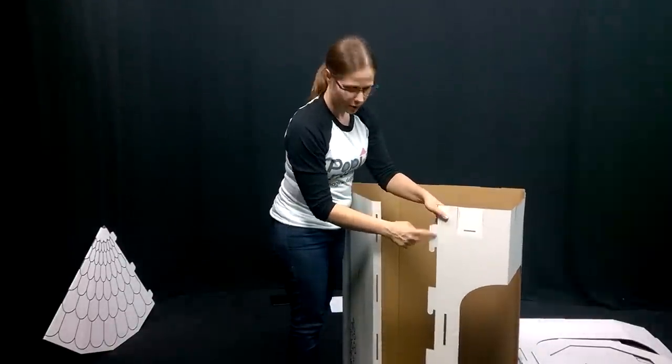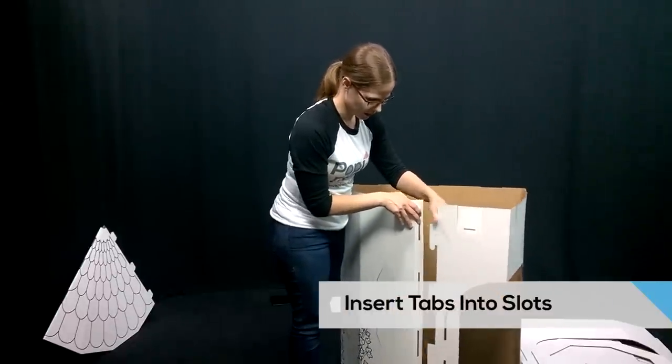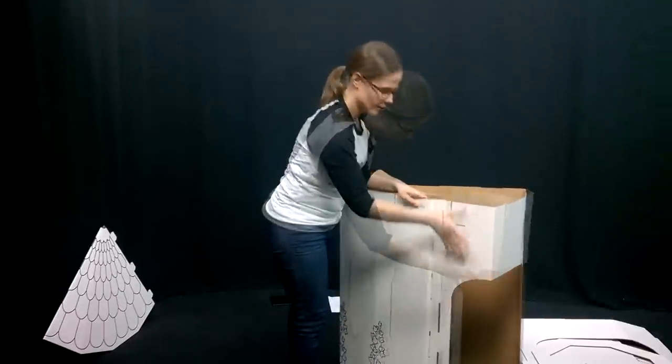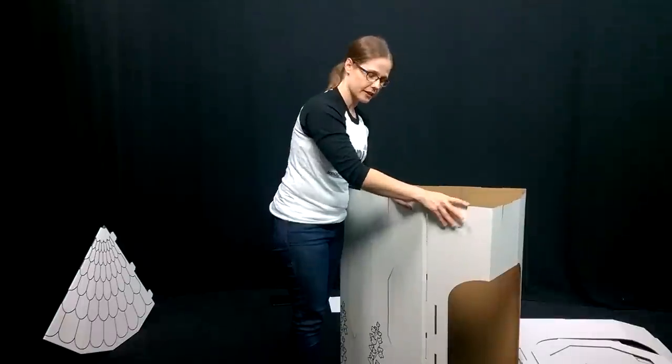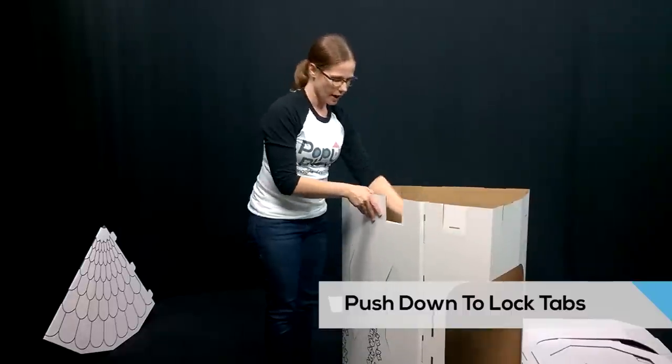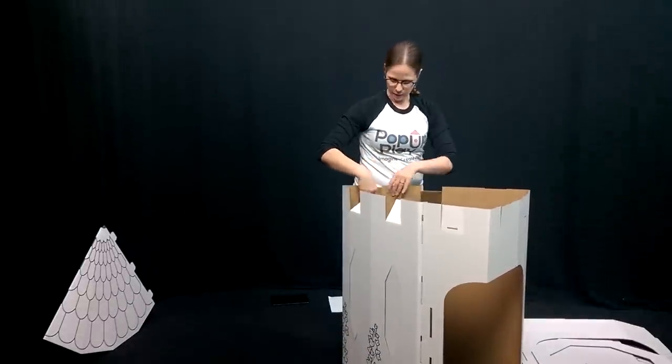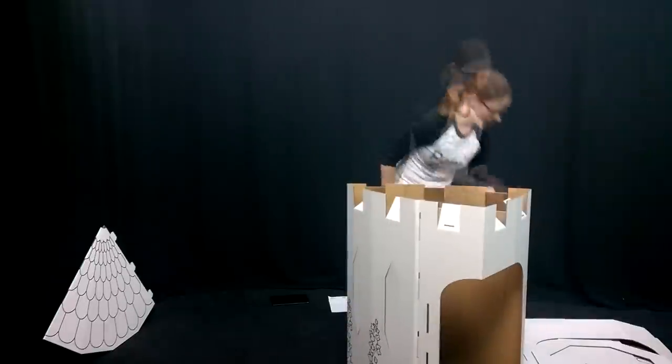Next, we'll take the tab with all the tabs right here, and we're going to insert it into the slot just like this. Push down on top of the tower to make sure that the slot is fully seated. Once I do that, I'm going to bend all of these little tabs in the center down so they're ready to go.